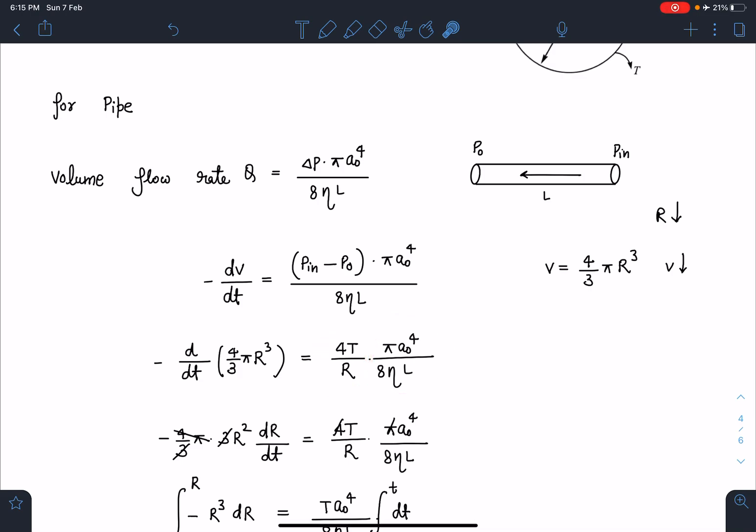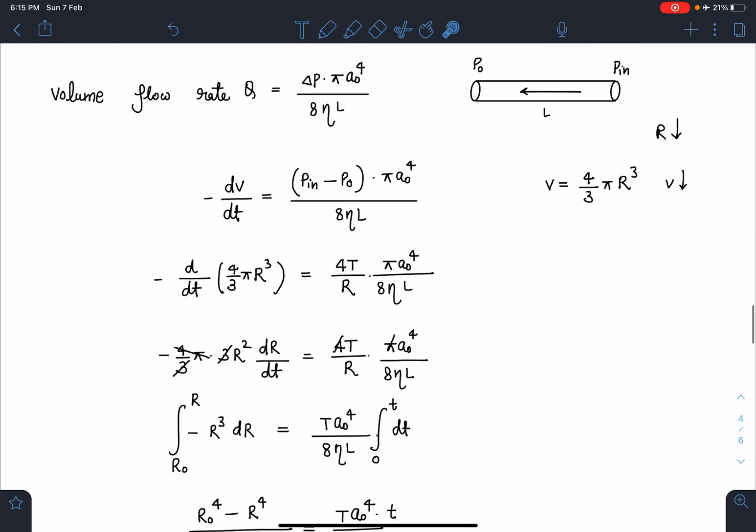Now I can just separate the variables and I can write this as 4/3 π × 3r²dr/dt and this value 4T/R. If I simplify this and integrate, before integration this will become -r³dr.